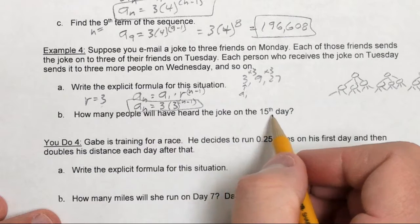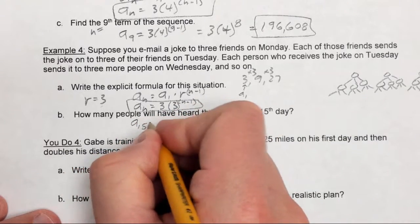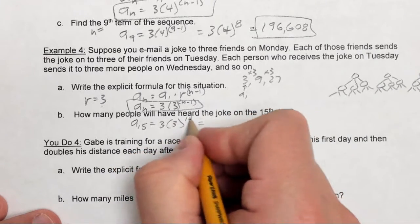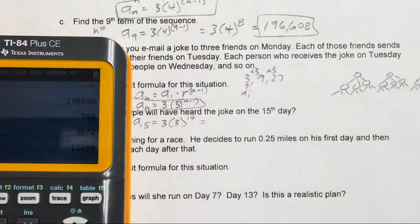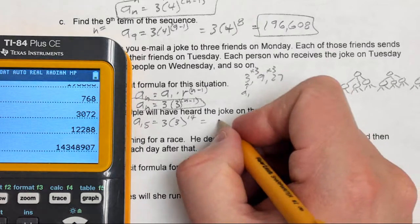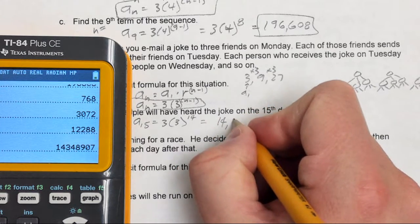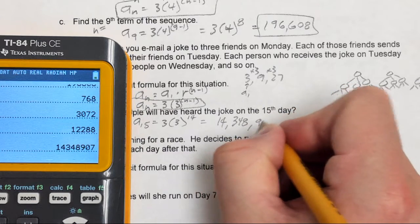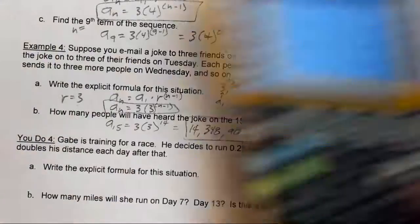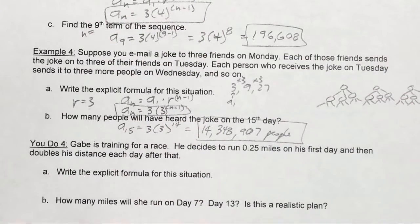To find how many people would have the joke on the 15th day, plug in n equals 15: 3 times 3 to the 14th power, which equals 14,348,907 people. This must be some pretty good joke! I hope this helps explain how to do basic geometric and arithmetic sequence problems. Have a good day, bye-bye.